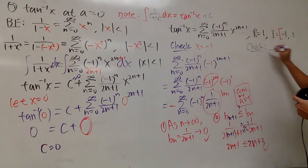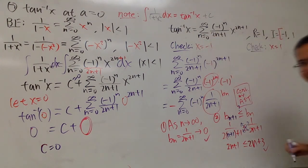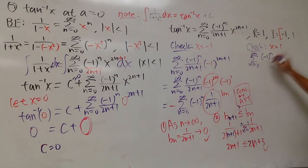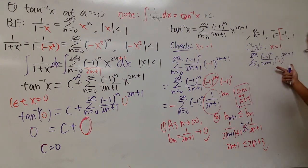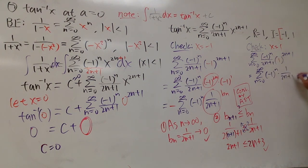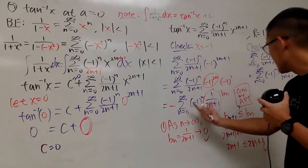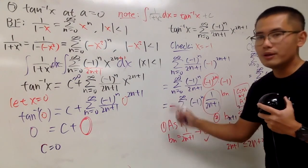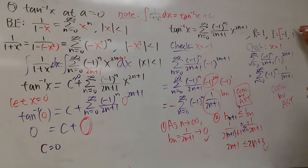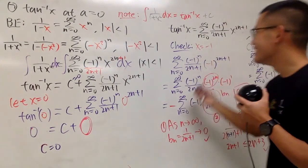Don't forget to check when x equals positive 1. Put 1 in here: we look at the sum as n goes from 0 to infinity of negative 1 to the nth power over 2n plus 1, times 1 to the 2n plus 1 power. The good thing is that 1 raised to any power is always 1, so this is exactly the same alternating series — it also converges by AST. Therefore, we include positive 1 as well, and we're done.